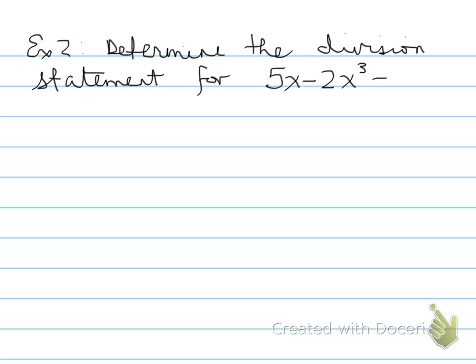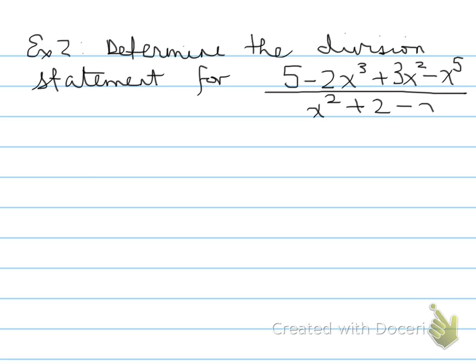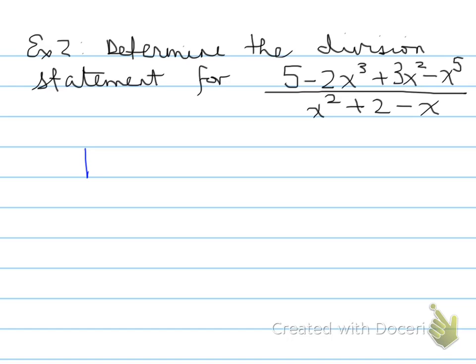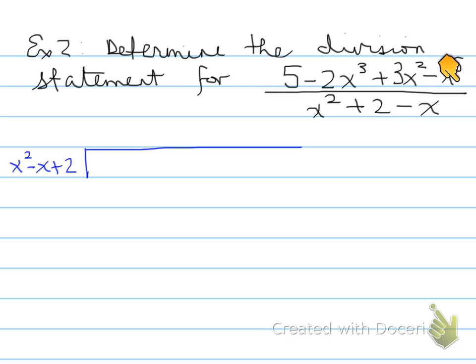Example number 2: determine the division statement for 5 minus 2x cubed plus 3x squared minus x to the 5, divided by x squared minus x plus 2. First, notice that none of these terms are in the proper order. To divide, you must put the dividend in order. The dividend has a degree of 5, meaning there must be 6 terms — one for each: x to the 5, x to the 4, x cubed, x squared, x, and the constant. We don't have all 6 terms, so we'll need placeholders.